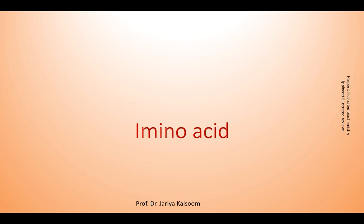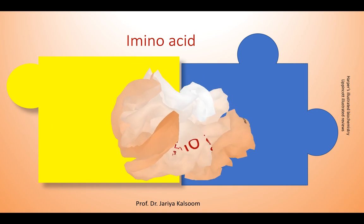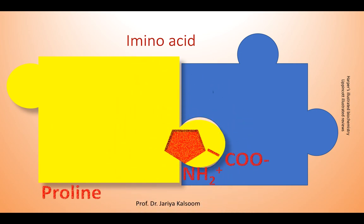Finally, there is proline. Proline differs from other amino acids in that its side chain and alpha-amino nitrogen form a rigid five-membered ring. Proline therefore has a secondary rather than a primary amino group.